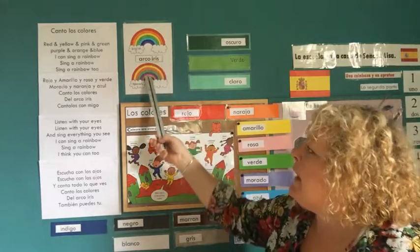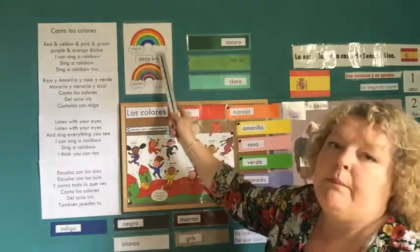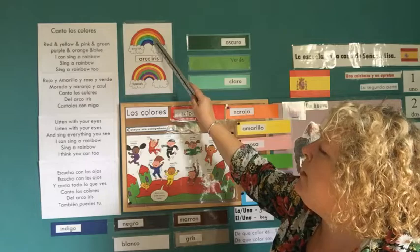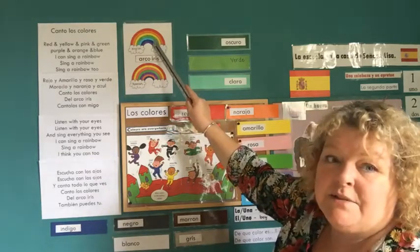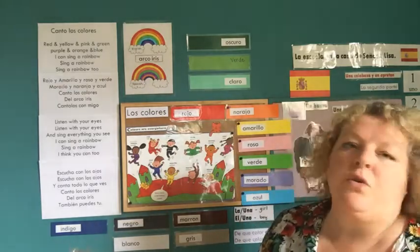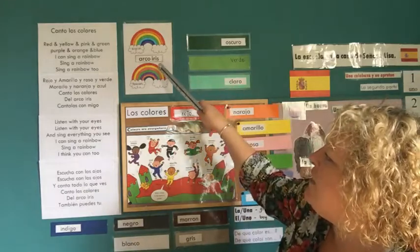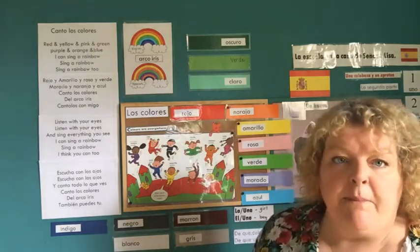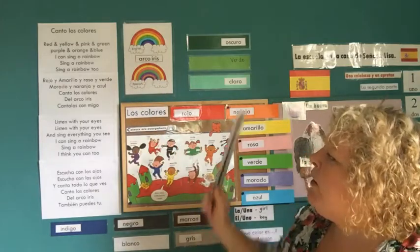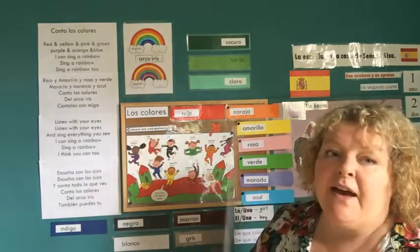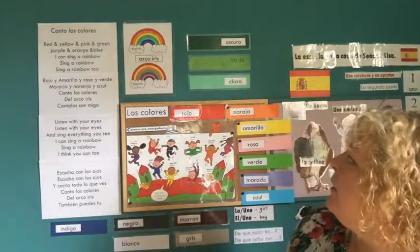Now let's have a look at the arco iris. If we have an English rainbow - we all know the English rainbow and the order: red, orange, yellow, green, blue, indigo, and violet. I was shocked to find out that different countries have different orders. Spanish has red, orange, pink, green, purple, orange, and blue - which is going to be really hard for me to remember. An arco iris, if you haven't guessed, is a rainbow - it's the arc of iris. An iris is a goddess.